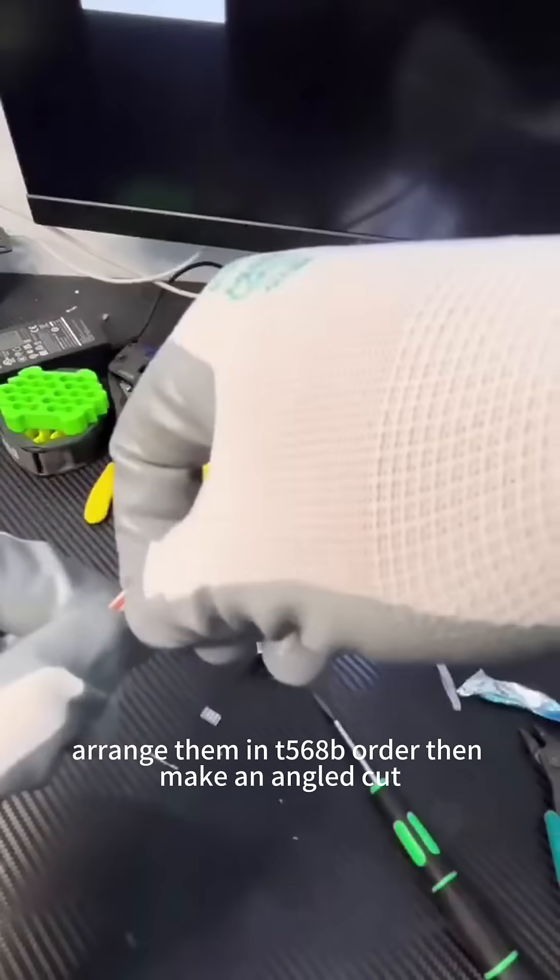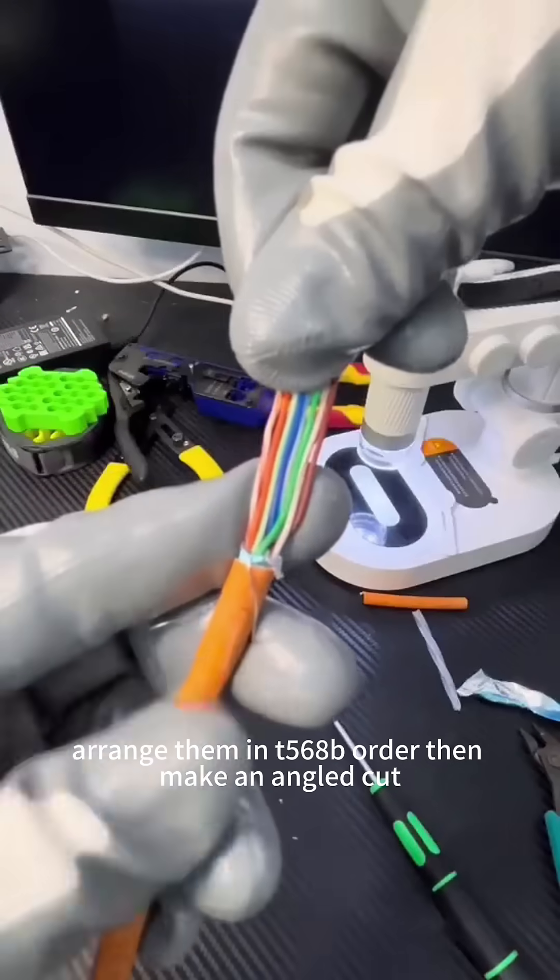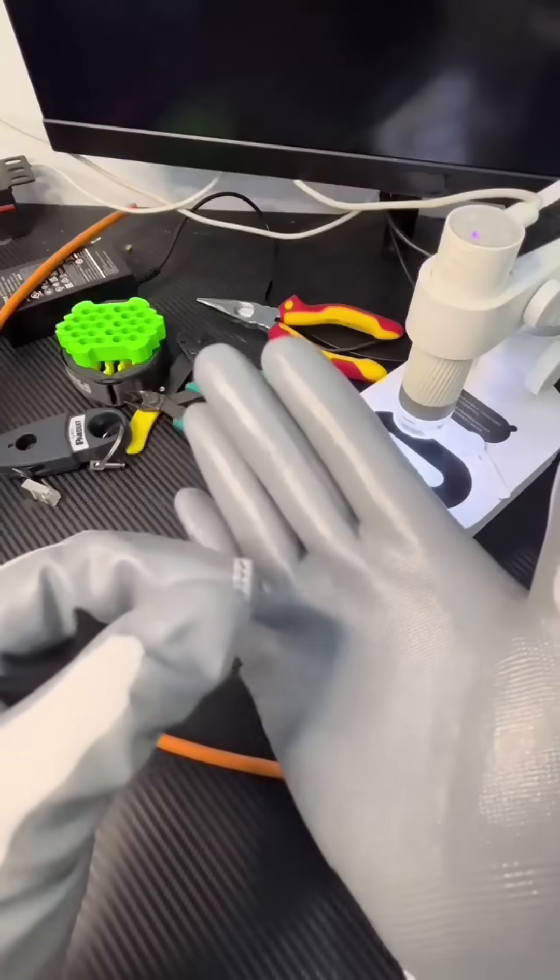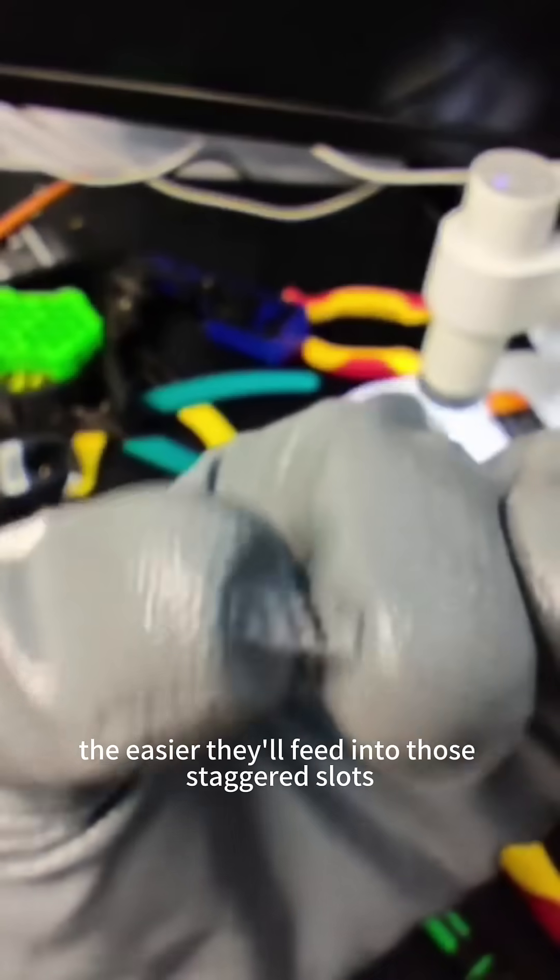Arrange them in T568B order, then make an angled cut. The sharper the angle, the easier they'll feed into those staggered slots.